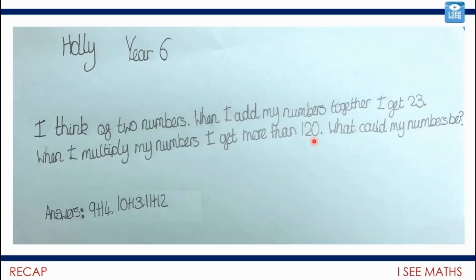So 10 and 13 make 23. When they're multiplied we get 130. And 9 and 14 is 23, 9 multiplied by 14 is 126. And then I can't have 8 and 15 because 8 times 15 equals 120, and it's got to be more than 120. So I thought this was a brilliantly designed question from Holly. Well done Holly.